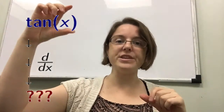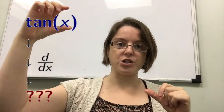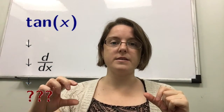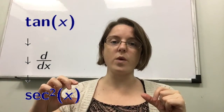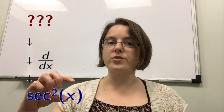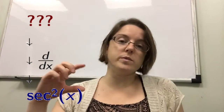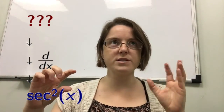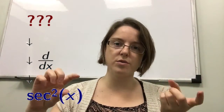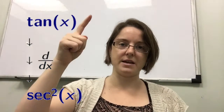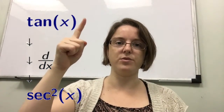Suppose I have the tangent function. Its derivative is secant squared. Antiderivative goes in the other direction. We would be starting with secant squared — what's a function whose derivative is secant squared? That's tangent, because I remember my derivatives.